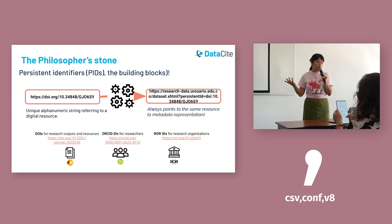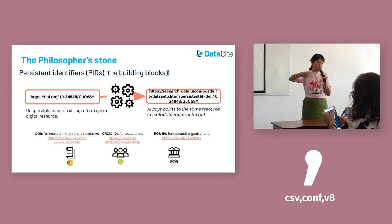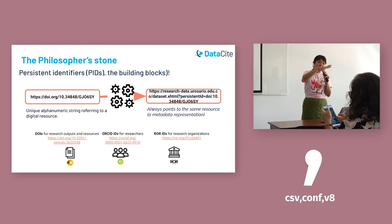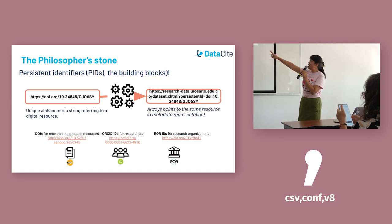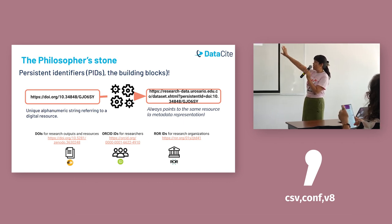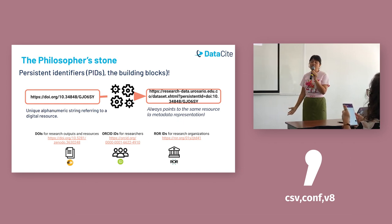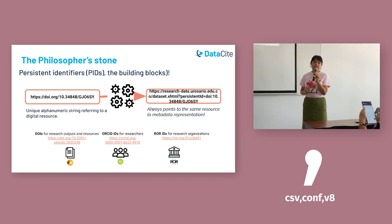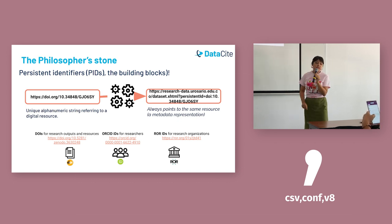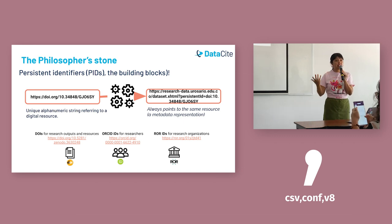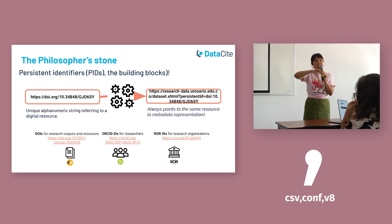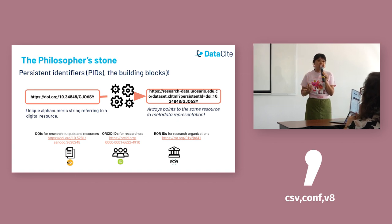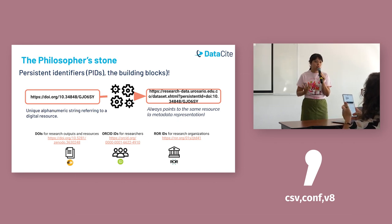What is the philosopher's stone — the element that can transform metals into gold, or data into gold? Persistent identifiers. A persistent identifier is a unique alphanumeric string that refers and redirects to a digital resource. The most common persistent identifiers are DOIs for research outputs and resources, ORCID identifiers for researchers, and ROR identifiers for research organizations. Because persistent identifiers help identify and connect entities across the research ecosystem, they can be considered the building blocks of research infrastructure.